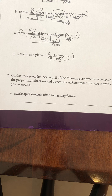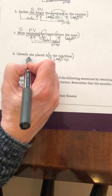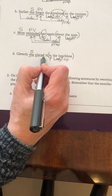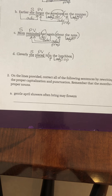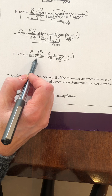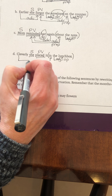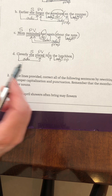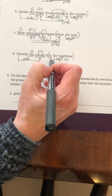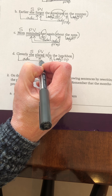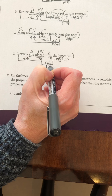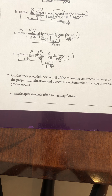Cleverly she placed it in the lunchbox. This is a sentence and it is declarative. This sentence is about she, so she is the subject. This sentence tells us that she placed, so placed is the predicate verb. Placed how? Cleverly — so cleverly is an adverb because it modifies the verb. Placed where? In the lunchbox — so in the lunchbox is an adverbial element and is a prepositional phrase. Yours should look like mine.